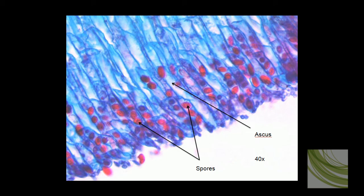This is the best view of this slide. We're using the 40x objective to show the edge, and we can see these long tubes which are called asci, and inside are spores. Each ascus will produce eight spores, and these spores will be dispersed and become new Peziza. How these spores arise is rather interesting.